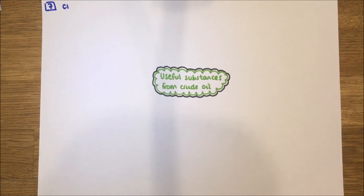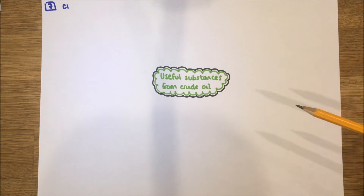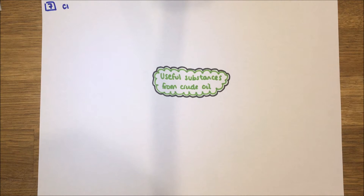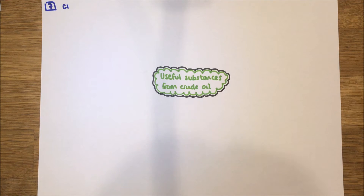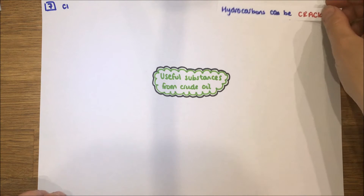This is the seventh revision video for C1. We're going to start looking at useful substances from crude oil. In the last topic we looked at crude oil and talked about alkanes. In this video we're going to look primarily at alkenes and their uses. We know that crude oil is basically a mixture of hydrocarbons.